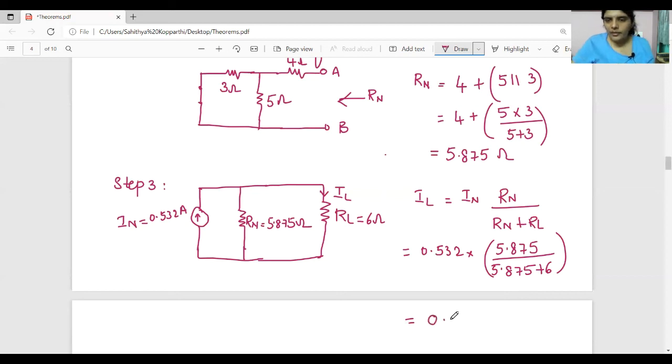So we get 0.263 amperes as the current flowing through 6 ohm resistance.